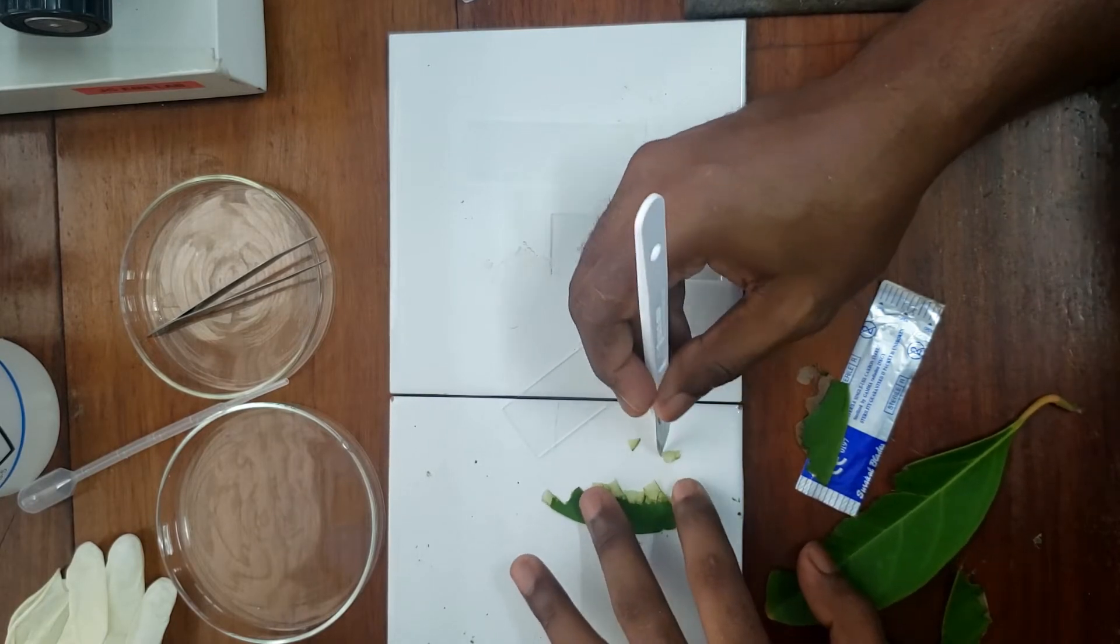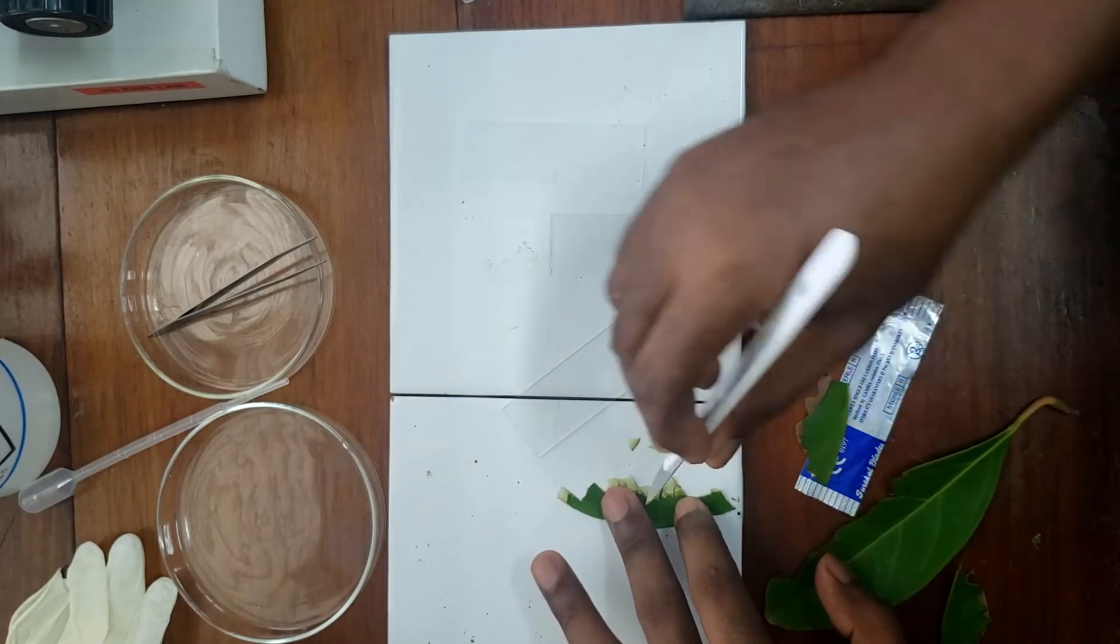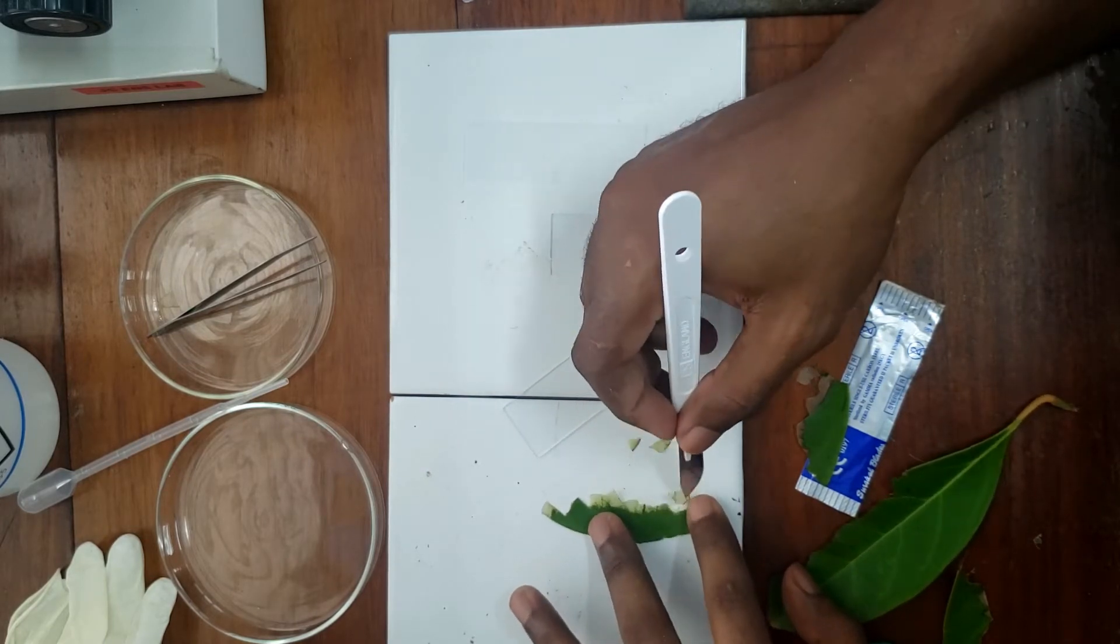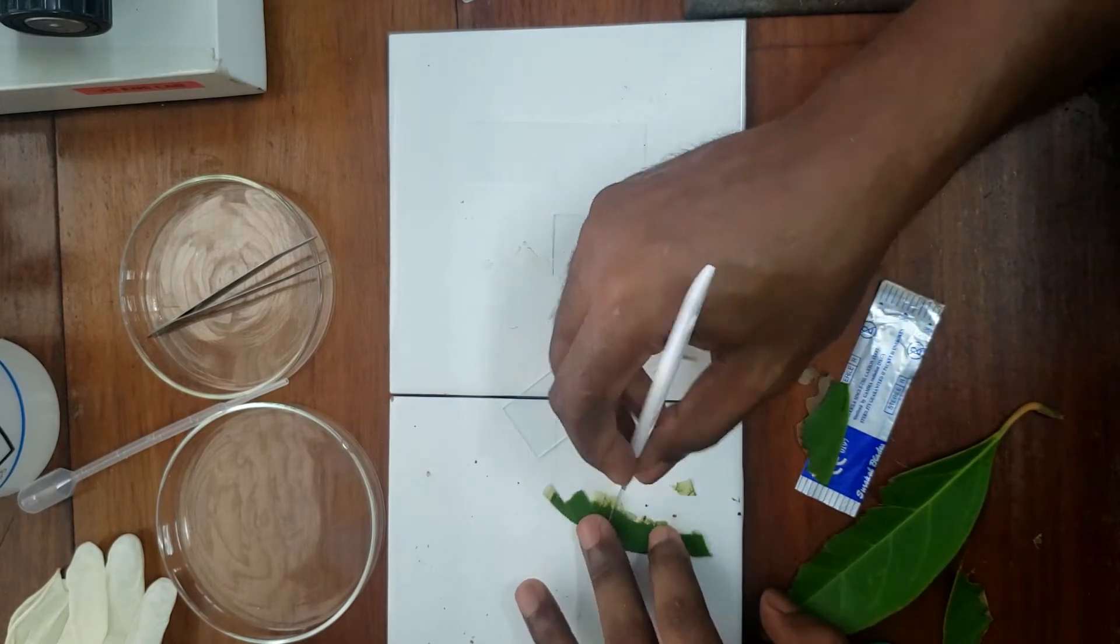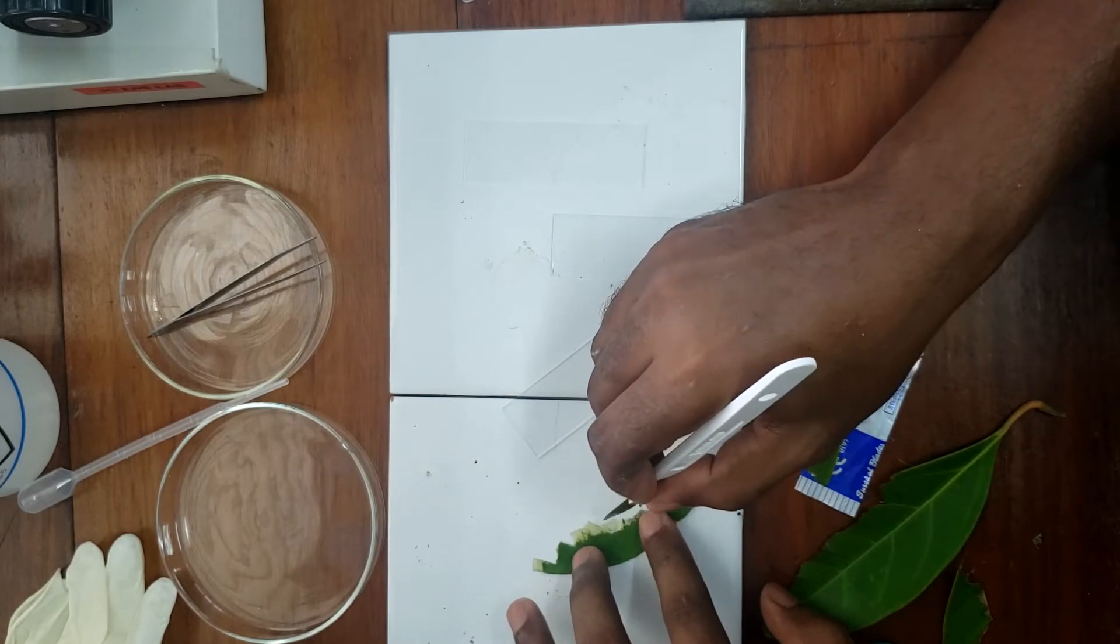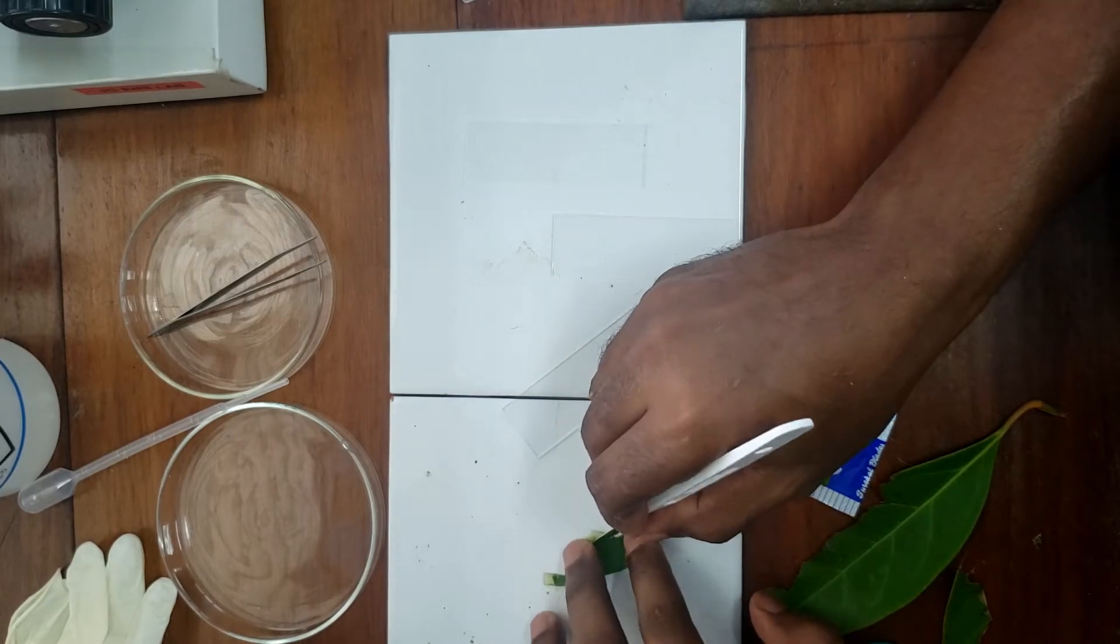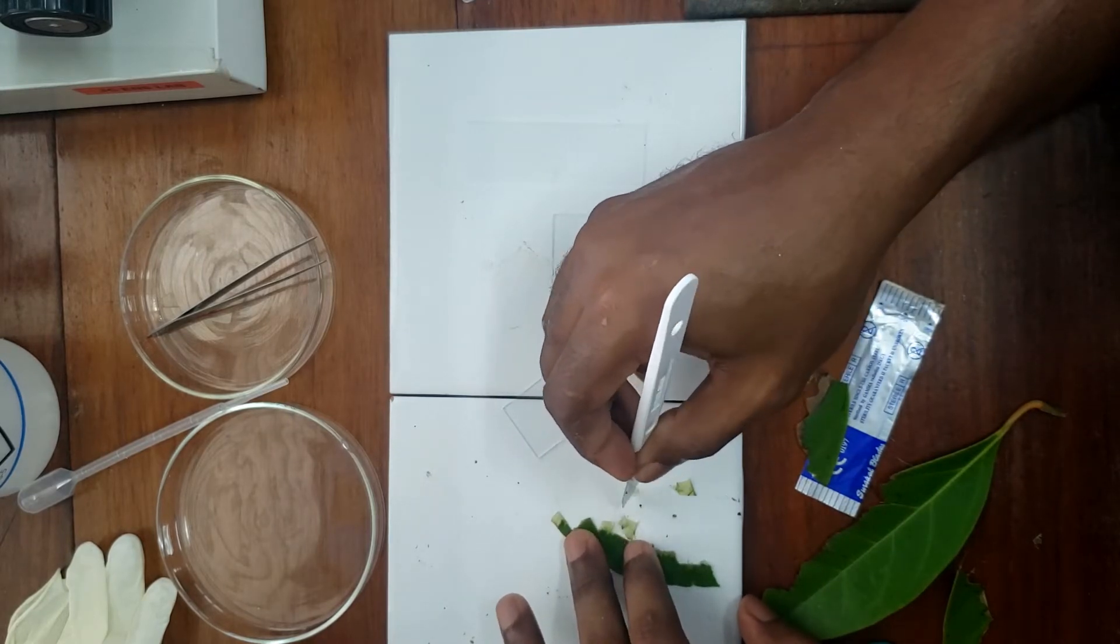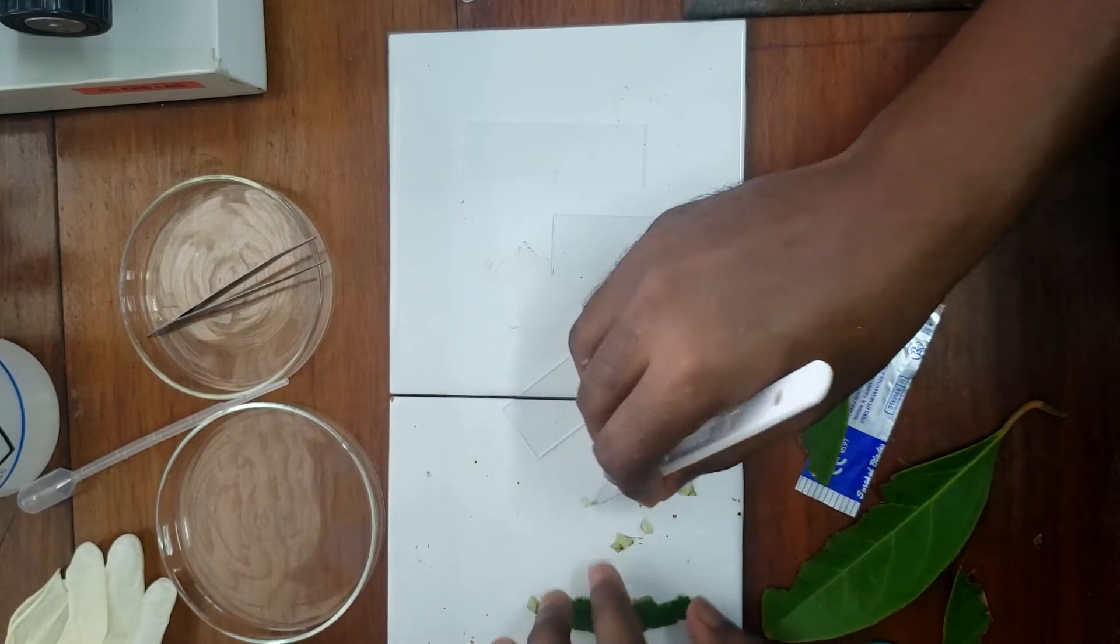Smaller segments from this. You want to get mainly the translucent part. I'm going to do several pieces because I want to try out different stains to see which one will give us the best results under the microscope. Okay, that should do.